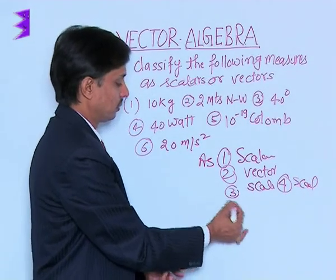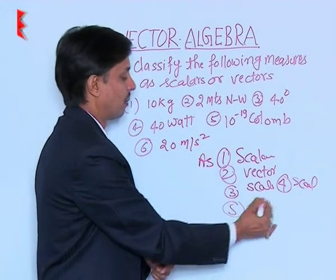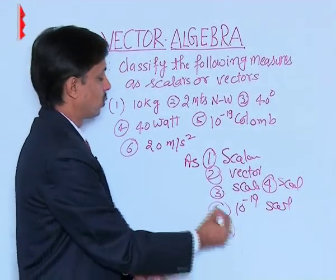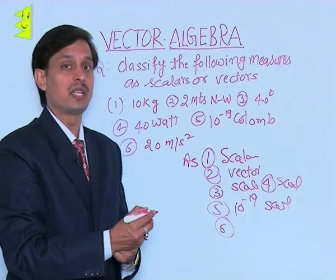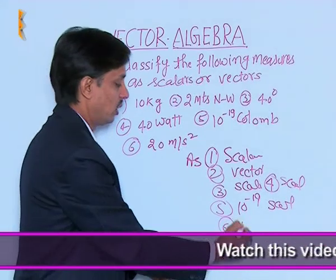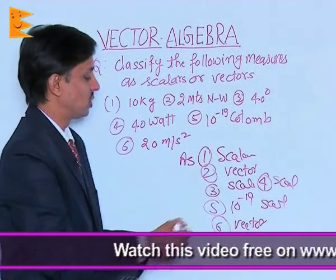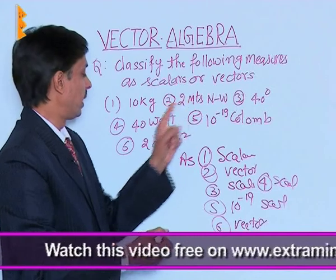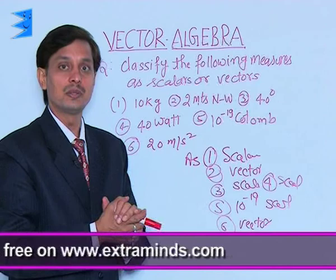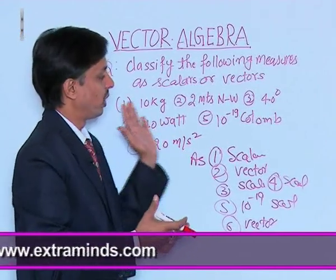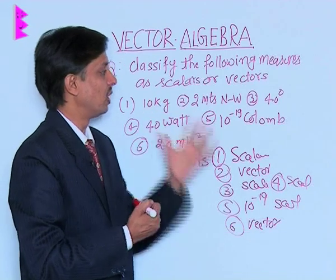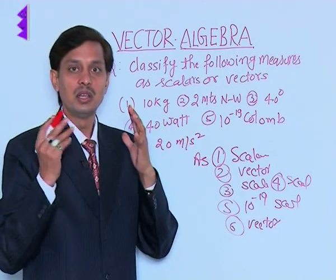Fifth: 10 to the power minus 19 coulomb — it is also a scalar. Sixth: 20 meters per second squared — it is acceleration, so it is a vector quantity. Out of these six, the second and sixth are vector quantities as they are associated with direction, whereas the remaining ones require only magnitude and are therefore scalar quantities.